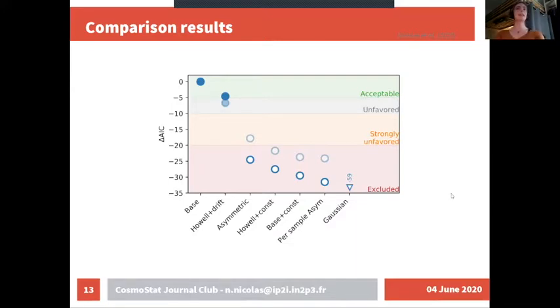What we are reading here is that any model that doesn't include an evolution with the redshift is automatically excluded as a suitable description of the data relative to our base model. For instance, the asymmetric one has 10 to the minus 6 chance to describe the data as well as our base model. This strongly favours the fact that the stretch is evolving with the redshift. Now, I hope you have understood the title of this presentation.